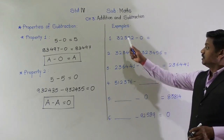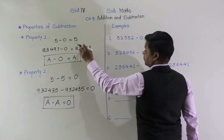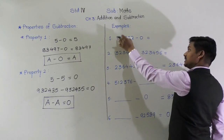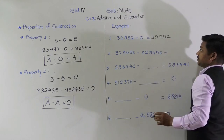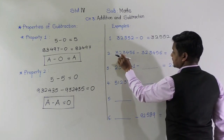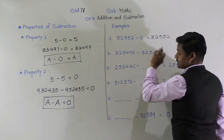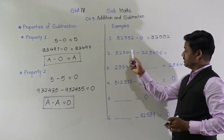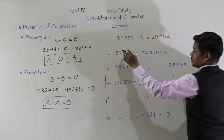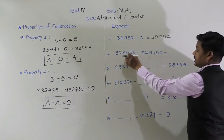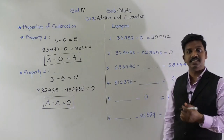First example: 32,552 minus 0. This is based on the first property — when we subtract 0 from any number, the answer is that number itself, that is 32,552. Second example: 3,23,456 minus 3,23,456. The same number is subtracted, so based on the second property, a minus a equals 0. The answer is 0 because the same number is subtracted.